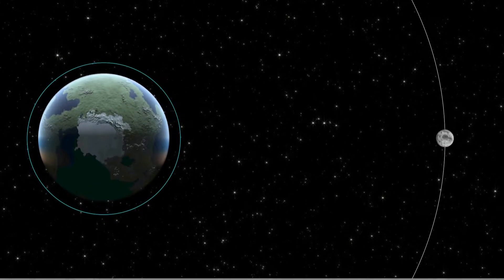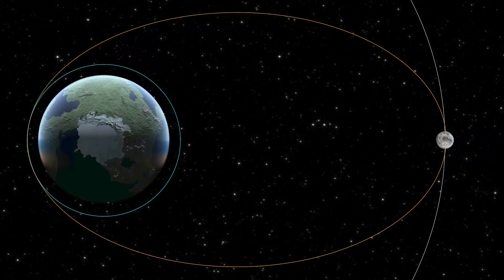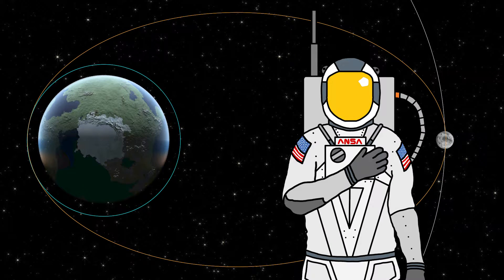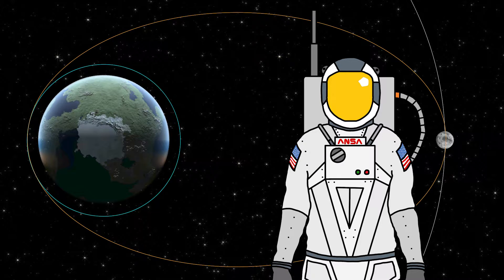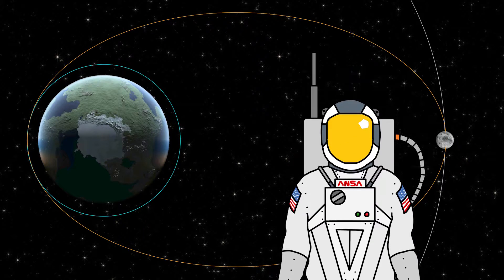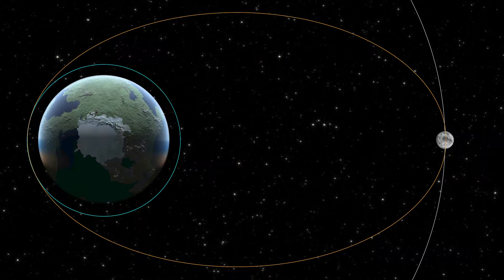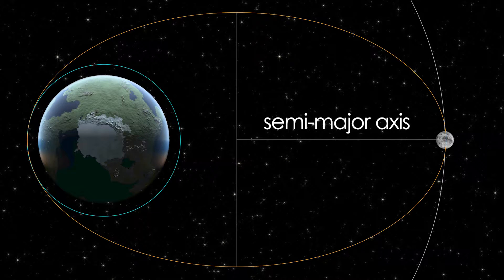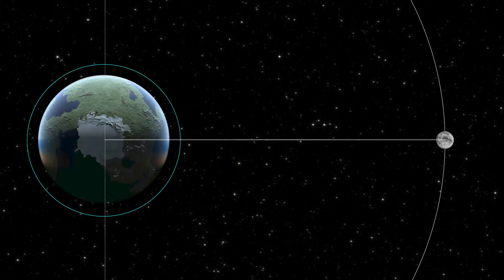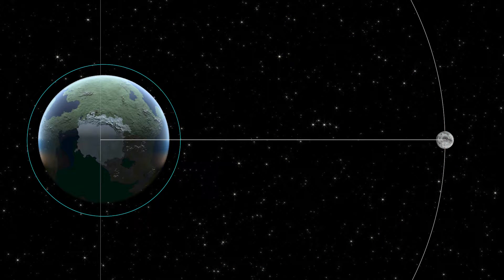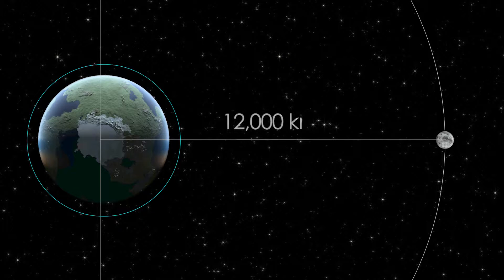The first step in this problem is to create our transfer orbit. Thankfully, this is super simple, as the Mun is in a perfectly circular orbit with zero inclination, basically meaning it's perfectly in line with Kerbin's equator. What we need from this orbit is its semi-major axis, which is this distance on an ellipse, but in our case it's a circle, so it's just the radius. According to the KSP wiki, that's about 12,000 kilometers.